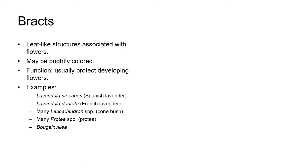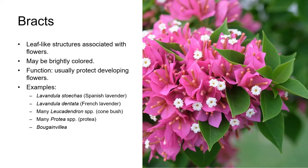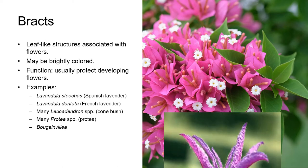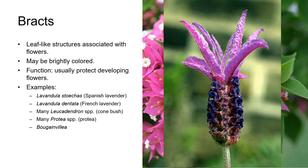Bracts are leaf-like structures that are usually associated with flowers. They may be brightly coloured and often add to the ornamental appeal of many plants such as bougainvillea and many of the leucodendrons and proteas. It's thought that the function of bracts is to help protect the flowers when they're developing. Bracts are usually located immediately below an inflorescence, but in the case of Spanish and French lavender they're located at the top of the inflorescence and give the flower spikes their distinctive butterfly wings or bunny ears.